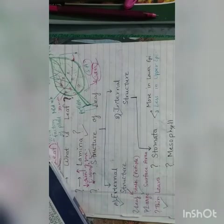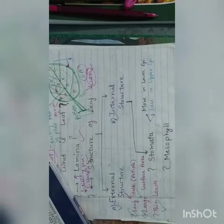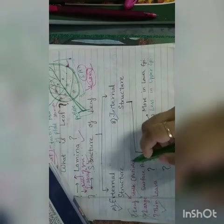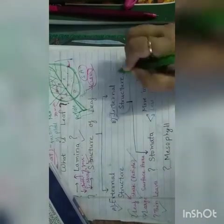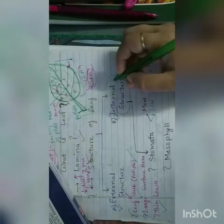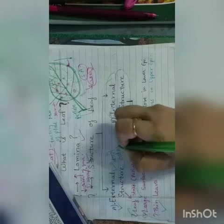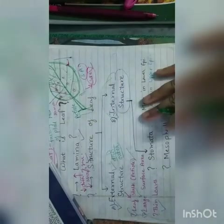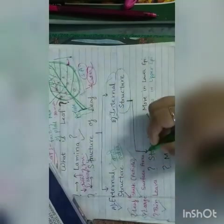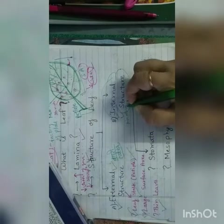First of all we will talk about leaf stalk, that is petiole. This leaf stalk is the part of leaf which is attached to any branch. The external structure includes petiole, lamina with large surface area, and thin leaves. Then we come to the internal structure.